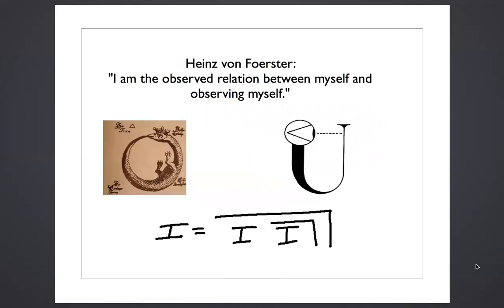Heinz von Forster said, I am the observed relation between myself and observing myself. And this sentence is occurring in ordinary language. And at least to those of us used to cybernetic talk, this is understandable and transparent in the form of its speech.